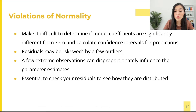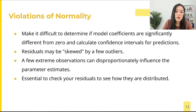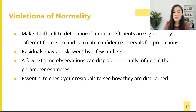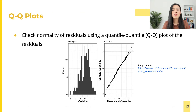However, violation of normality for the residuals creates a couple of problems: it makes it difficult to determine if model coefficients are significantly different from zero, and to calculate confidence intervals for predictions. Sometimes the residuals are non-normal because they are skewed by the presence of a few large outliers. Since parameter estimation is based on minimization of squared error, a few extreme observations can have a disproportionate influence on parameter estimates.